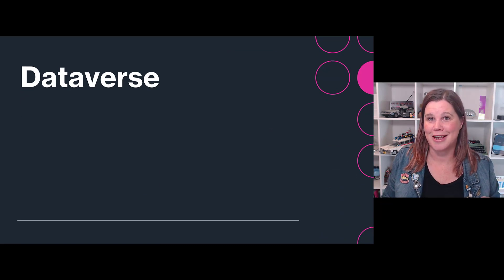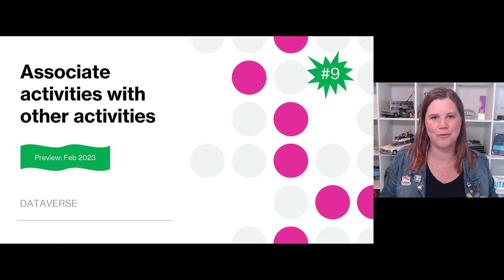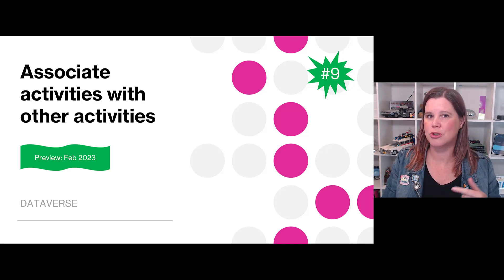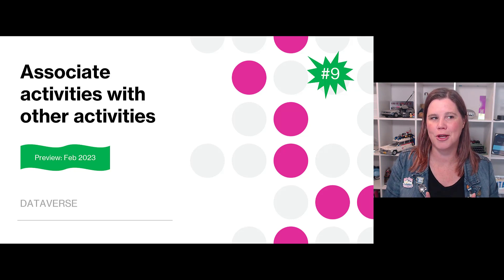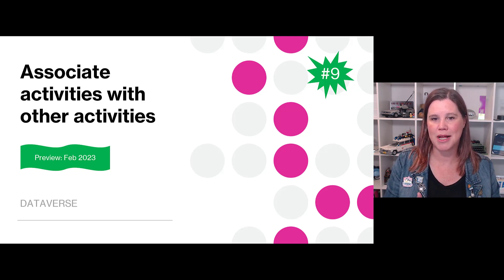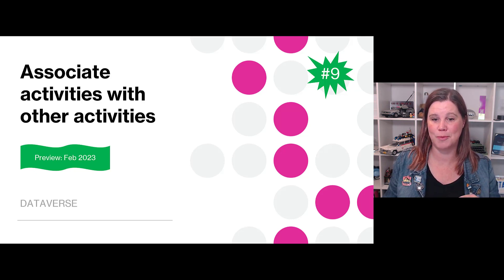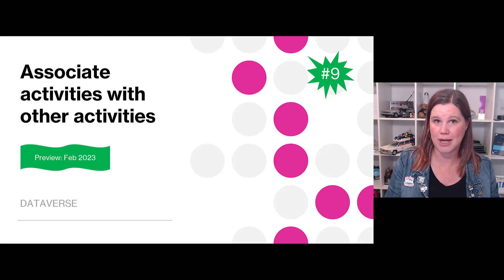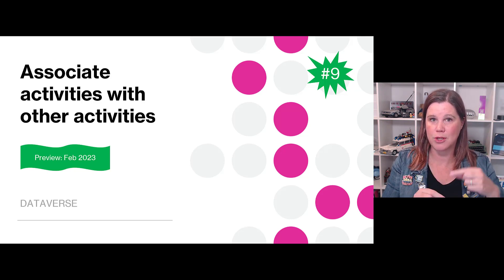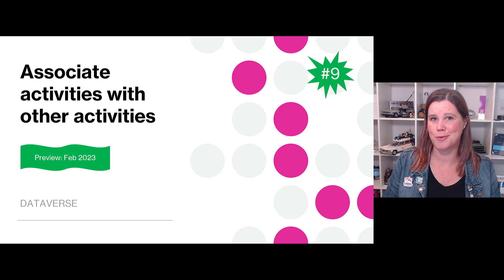Dataverse — last but certainly not least, and I'm interested to hear how you think you might use this one: associating activities with other activities. Activity records in Dataverse are things like emails, appointments, tasks, calls, Teams chats, and so on. We've always been able to attach these to business records — a contact, an account — but you couldn't associate an activity to another activity. That is now going to be possible. The release notes suggest use cases like associating a Teams chat activity to a task or appointment activity, and you might want to associate an email with a task.